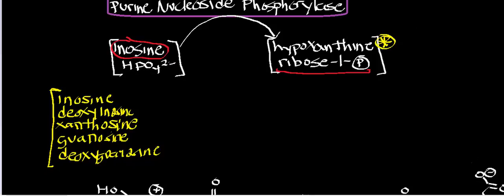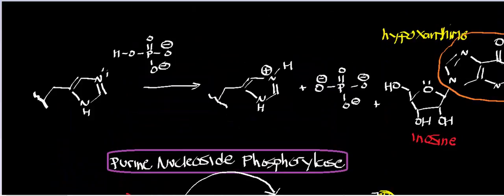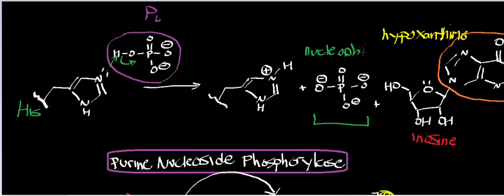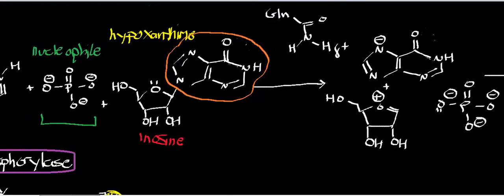Let's look at the mechanism of purine nucleoside phosphorylase. One thing to realize is it's an inorganic phosphate-dependent reaction. This molecule shown right here is inorganic phosphate. In the very first step of the mechanism, a critical histidine residue in the active site is going to deprotonate the inorganic phosphate, at physiological pH, into the fully deprotonated state. This fully deprotonated phosphate is ultimately going to be the nucleophile in this reaction. Then we have inosine entering.